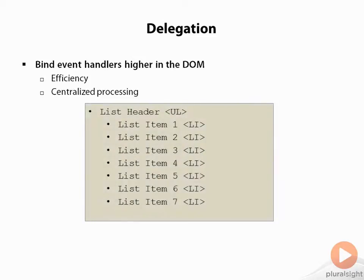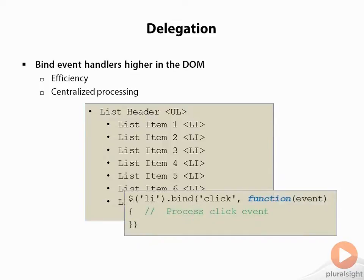Consider this simple list as a subset of the DOM tree. The list header represents an unordered list tag, and each list item represents a list item tag. Many developers will just attach event handlers directly to the elements they wish to process events for, using a syntax much like this one. The bind method will attach a copy of the event handler function to each list item element, placing multiple copies of the function in memory. This also limits the event handling to only elements that are currently in the list — any items added dynamically will not have an event handler attached.